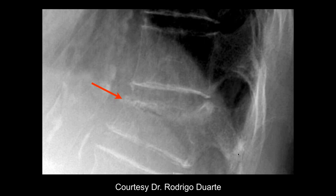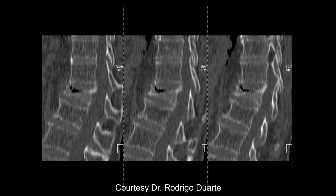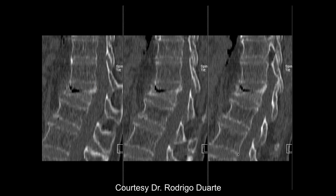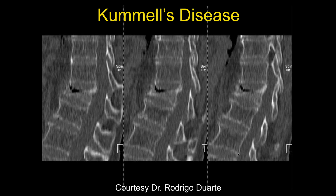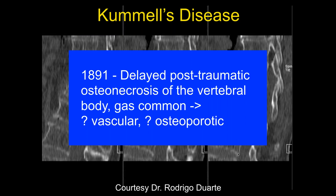There's a name for this phenomenon — some papers say that if you have gas within it then it's definitely not a metastatic lesion. Some people call it post-traumatic osteonecrosis. It was first described in 1891 and is typically seen in osteoporotic individuals. Exactly where the gas comes from is debated, but this is a recognized phenomenon and the literature shows that gas means it's not a malignant process.